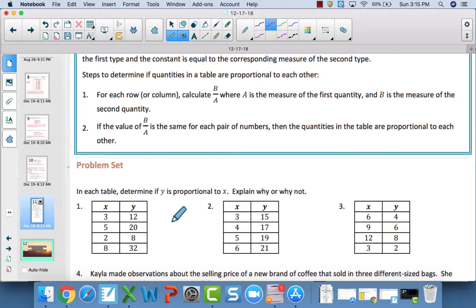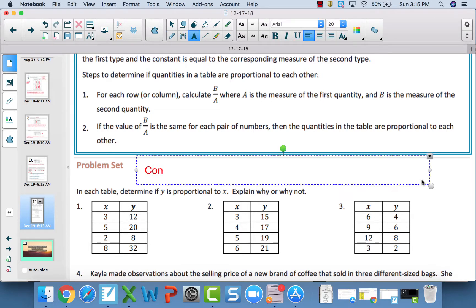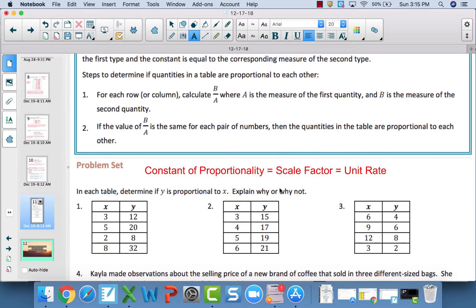Constant of proportionality is the same as scale factor. Constant of proportionality is scale factor, which is the unit rate. These are all the same thing. We already know how to calculate unit rate. We already know about scale factor. Constant of proportionality is just a different word that means the same thing.